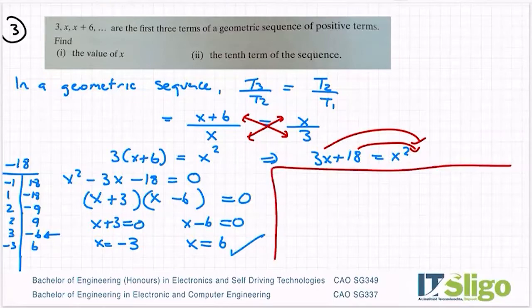So my sequence then is 3 comma x comma x plus 6. So 3, 6, 12, and so on, so forth is my geometric sequence.